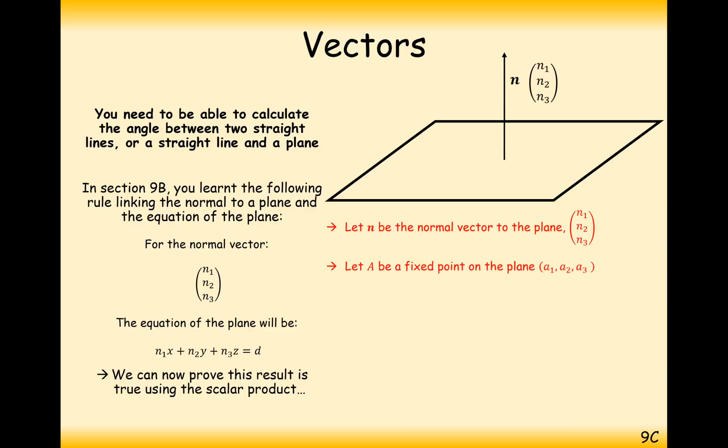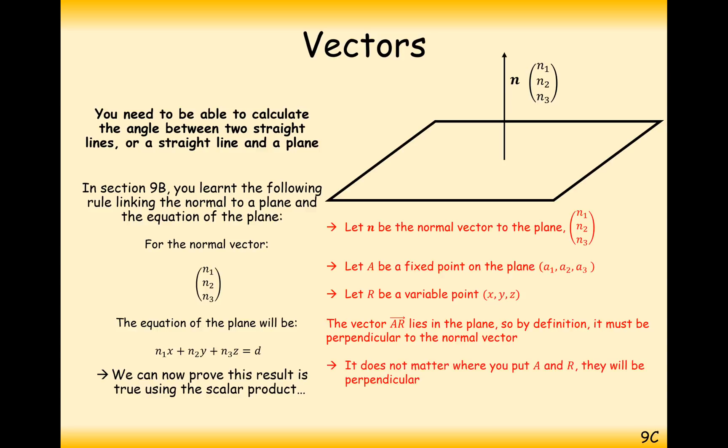We also need to know a point on the plane to get the full answer for that type of equation. So we've got a1, a2, and a3 as any random point on that plane. And r will set as a variable point, and the variable point represents any of the coordinates that can be on our plane, so x, y, z.